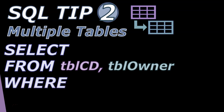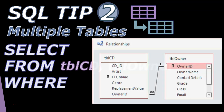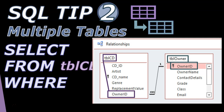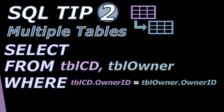Even if there are no other criteria, when you are using multiple tables there will always be at least one criteria: the criteria that links the two tables. In this case, there is an owner_id in one table — that's the foreign key linked to the owner_id of tbl_owner. It doesn't always mean the names are the same, but they will tell you what the link is. You specify it in the WHERE clause: tbl_cd.owner_id = tbl_owner.owner_id.